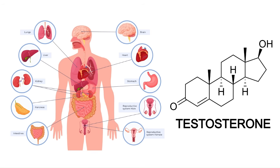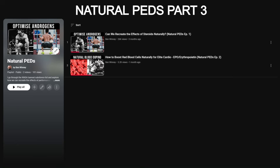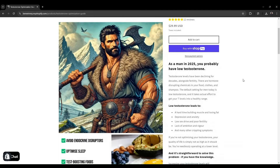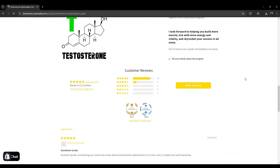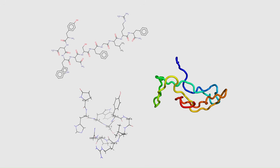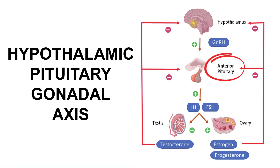What actually causes your body to make testosterone? In this video you're going to find out exactly that with these testosterone stimulating peptides. This is part three of my natural PEDs series — in the previous videos I covered androgens and erythropoietins. These are peptides, which are chains of amino acids, that increase testosterone, generally working through the hypothalamic pituitary gonadal axis, or the HPG axis.